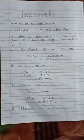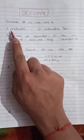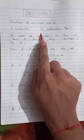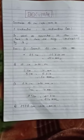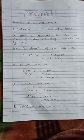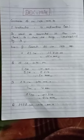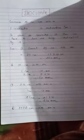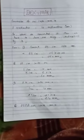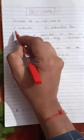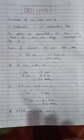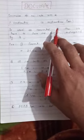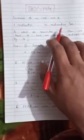One centimeter equals to 10 millimeter. In the past I showed how to convert a decimeter into centimeter — when we convert a decimeter into centimeter, we multiply by 10. Here also, one centimeter equals to 10 millimeter, so we have to do one simple thing: multiply by 10.